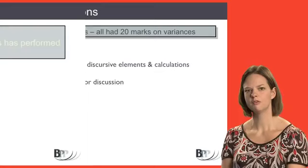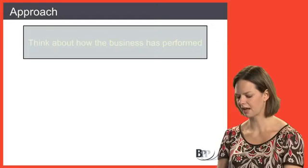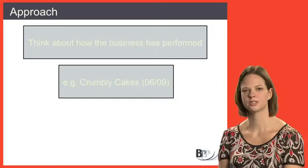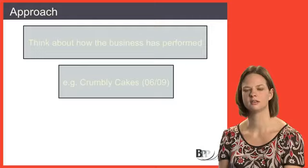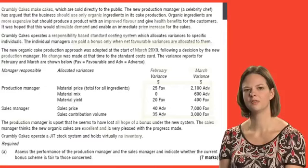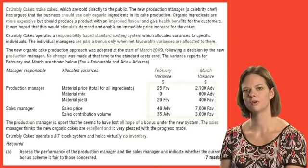Thinking about how the business has performed in our performance management paper and using variances to help us, I'm going to talk you through Crumbly Cakes, a question which occurred in the June 2009 examination. The examiner said that the calculations were well undertaken, but students struggled with part A. I've highlighted some of the key points and I'm going to talk you through the processes that should have been going through your mind as you were preparing for this question.